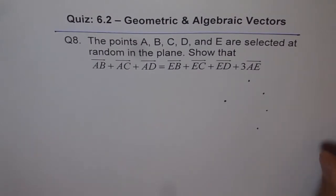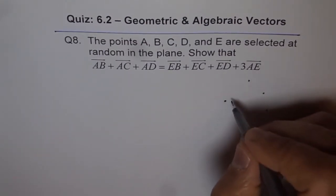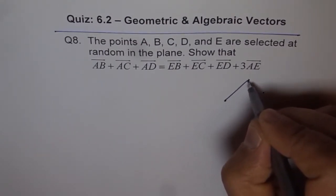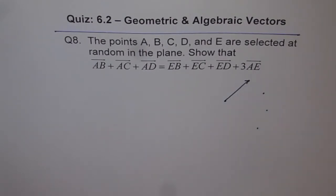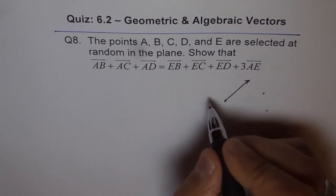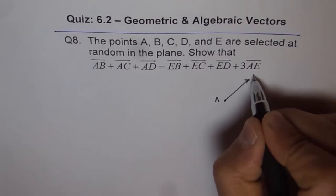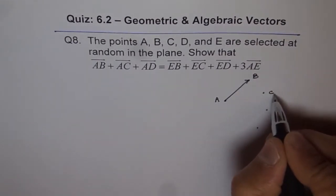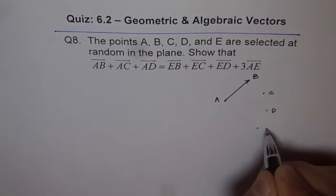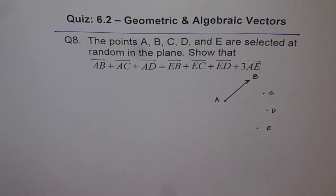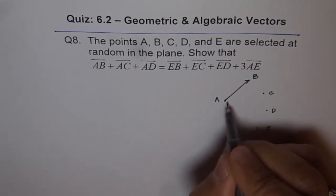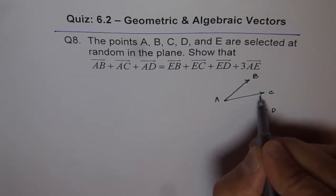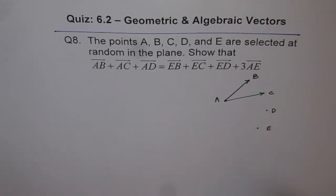So we have AB. Let me write this here, AB. And that is C for us. Then we have D and then we have E. So what we are saying is AB plus AC plus AD.